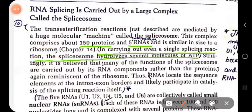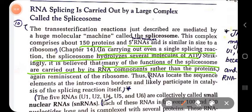Many of the functions of the spliceosome are carried out by its RNA components rather than the proteins, because the RNA will complementary base pair with the pre-mRNA which has to be spliced. The five small nuclear RNAs present within the spliceosome complex are mainly involved in its function. The RNA locates the sequence elements at the intron-exon border.